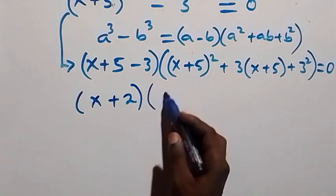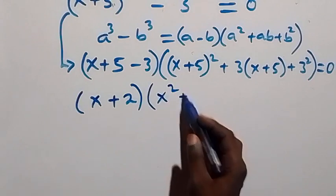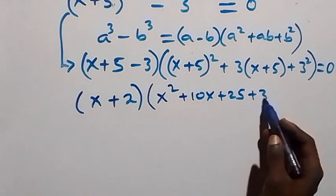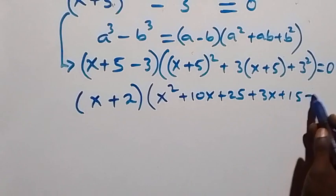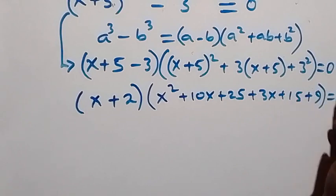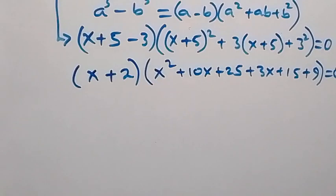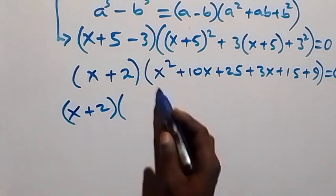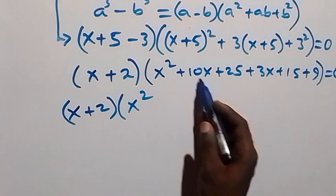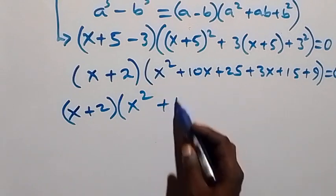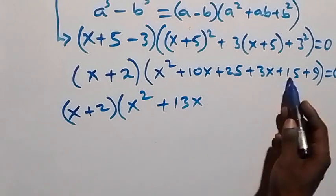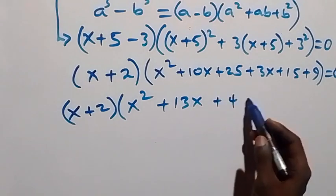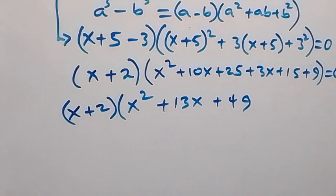Expanding: x squared plus 10x plus 25, plus 3 times x plus 5 giving plus 3x plus 15, plus 9. Collecting terms gives x squared plus 13x — since 10x plus 3x is 13x — and 25 plus 15 plus 9 gives 49. So we have x plus 2 times x squared plus 13x plus 49.